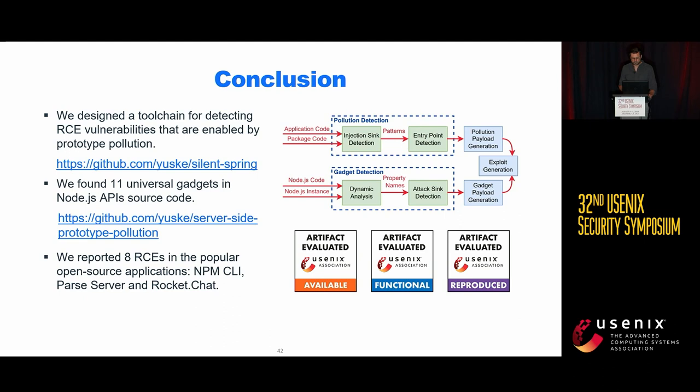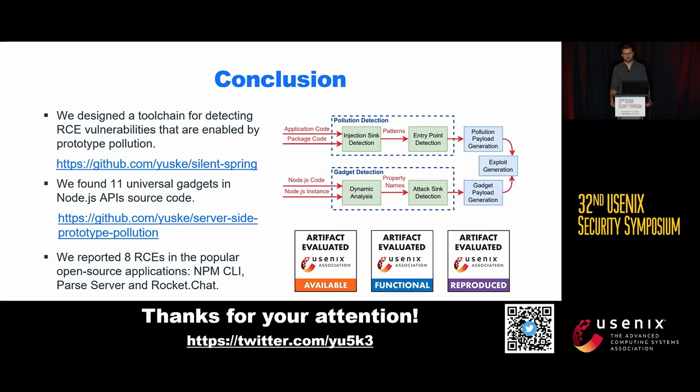In conclusion, we implemented tools to detect prototype pollution vulnerabilities and their gadgets, detected 11 new gadgets in Node.js APIs — most of which the Node.js team has already fixed — and reported eight remote code execution attacks in popular open-source applications. All code is publicly available. Thank you for your attention, and I will be happy to answer your questions.